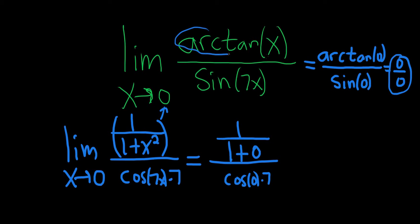So again, we took the derivative of arctangent and got one over one plus x squared. Looks good. Took the derivative of sine of seven x and got cosine of seven x times seven, right? That's the chain rule. Looks good.